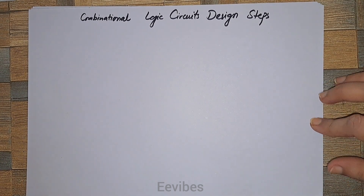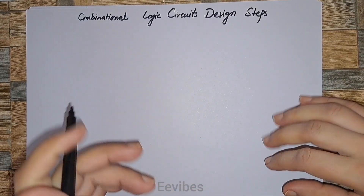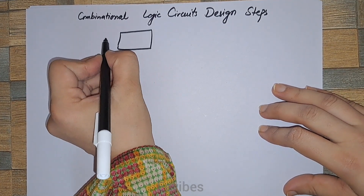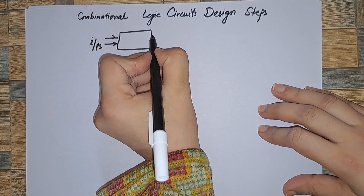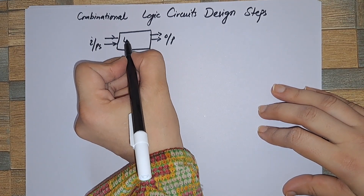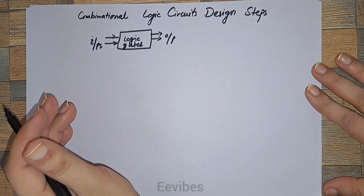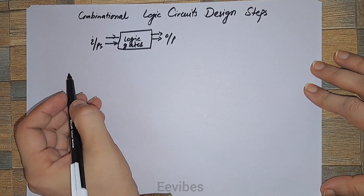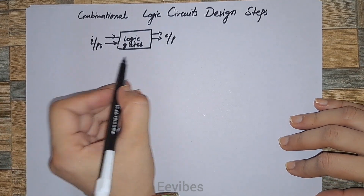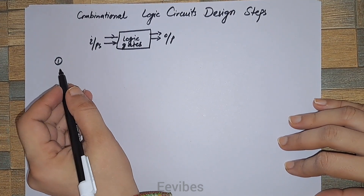Assalamu alaikum. I am Asma Mushtaq from EE Vibes, and in this video lecture we are going to study about the design steps of combinational logic circuits. Combinational logic circuits are circuits designed using logic gates, having a certain number of inputs and outputs, with logic gates in between, and are used for implementing a particular function behavior.